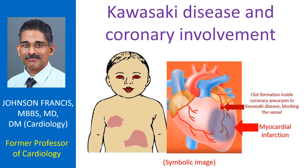Kawasaki disease is an acute febrile illness in children, usually less than 5 years of age. It was first described by Tomisaku Kawasaki in Japan in 1967, and is now known to occur globally. Important features include fever, rash, swelling of hands and feet, lymphadenopathy, and involvement of eyes, lips, throat, and coronary arteries. The most important sequelae of Kawasaki disease is coronary dilatation and aneurysm formation.